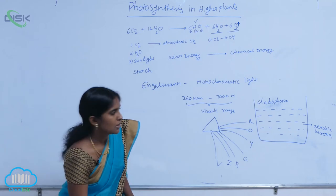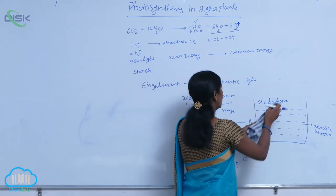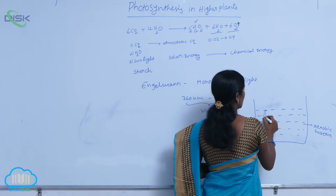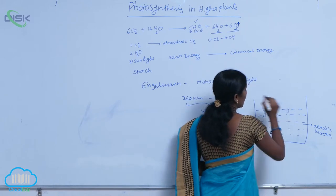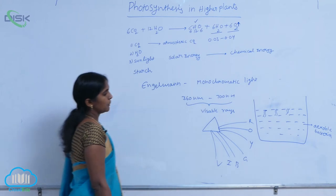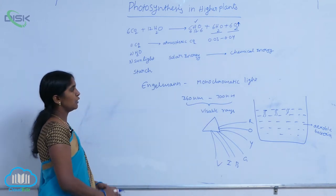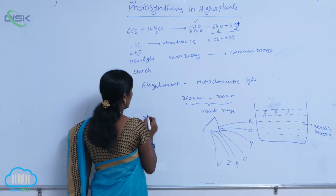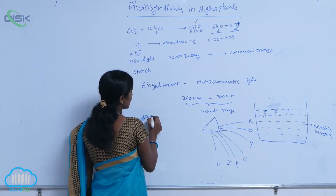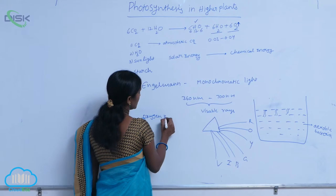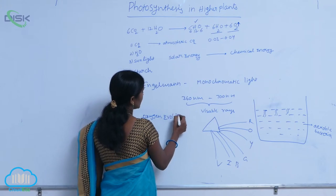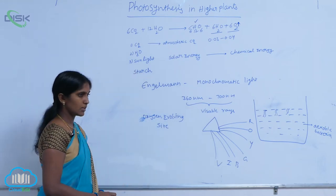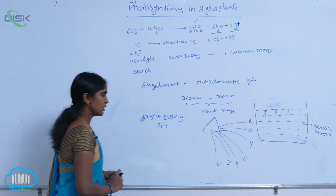Aerobic bacteria means bacteria that involve oxygen. The Cladophora is inoculated into the bacterial suspension. The purpose of Engelmann's experiment is to know about the oxygen evolving sites — specifically, which light is suitable for the production of oxygen during photosynthesis.